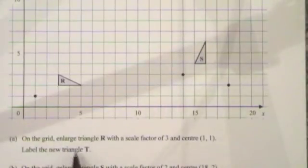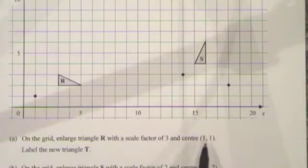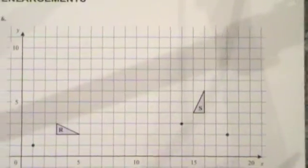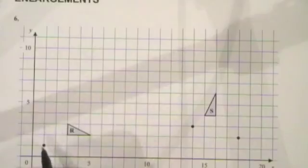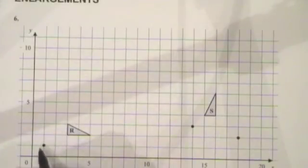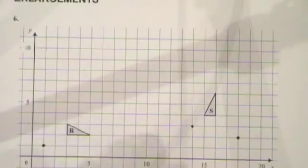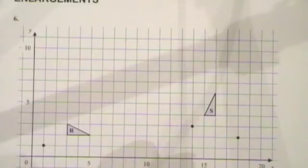The question says: on the grid, enlarge triangle R with a scale factor of 3 and a center of (1,1). The center is (1,1) and the scale factor is 3, meaning every point of this triangle is going to be three times further away from the center, and every side of the triangle is going to be three times as long.